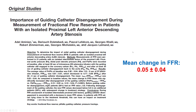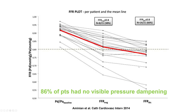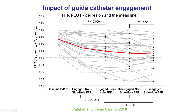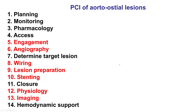How much can the pressure change? There was a study showing that the average change with guide engagement is 0.05. By disengaging, the FFR came down nicely, and sometimes there was no obvious visible pressure dampening. We also had a study using side-hole guides where there was improvement, but still when the guide came out, there was further reduction in the FFR.